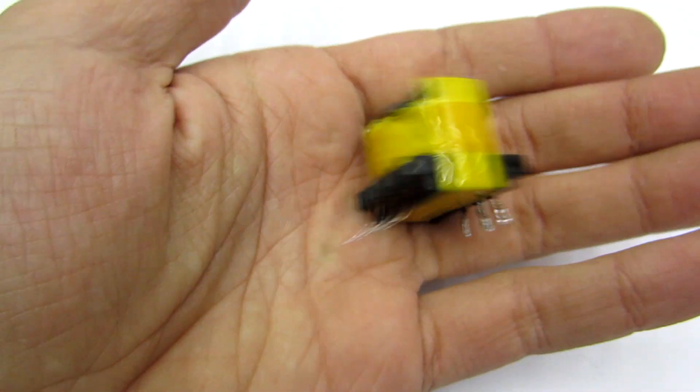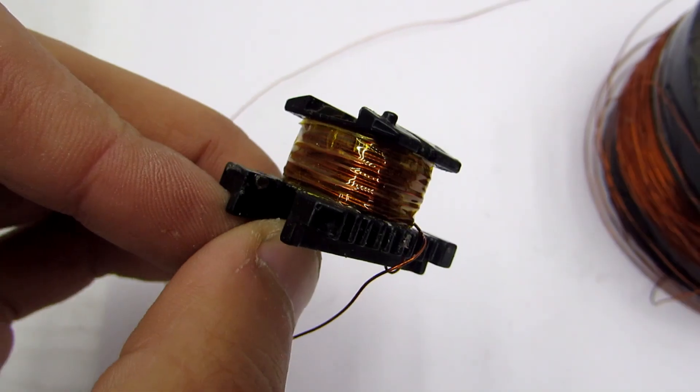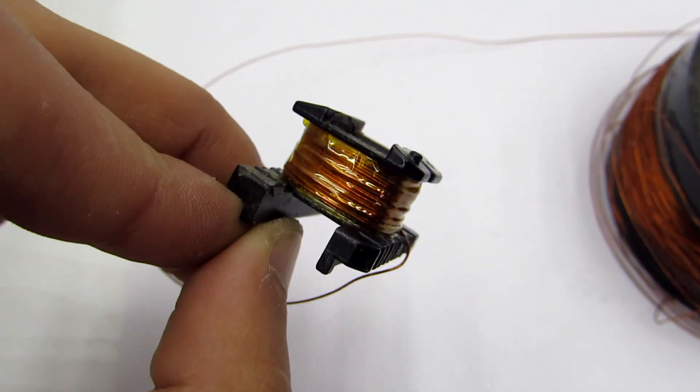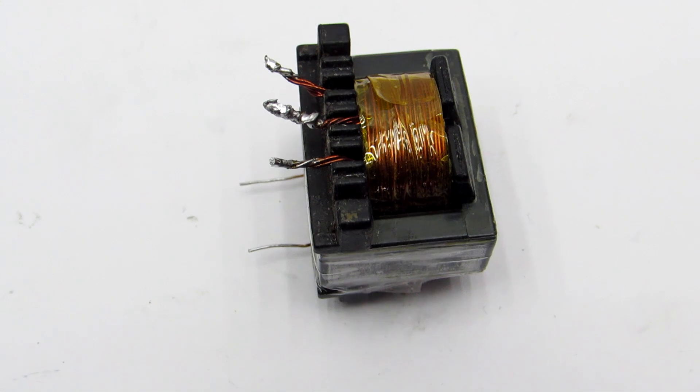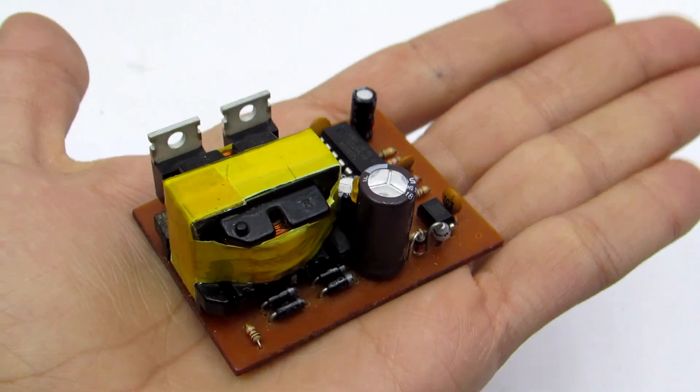Transformer winding data will depend solely on the type and size of the core, calculated by a specialized program. A link to the program will be in the description. In my case, the core is taken from a computer power supply. The actual power is no more than 150 watts.